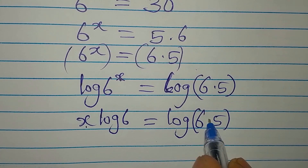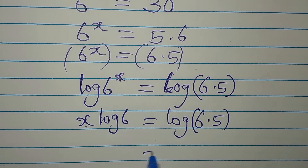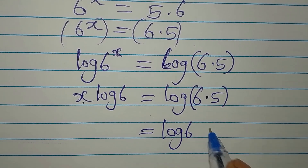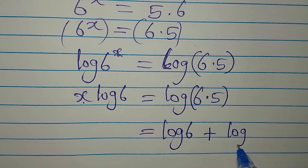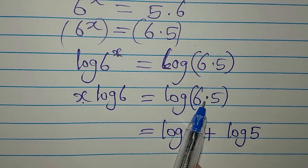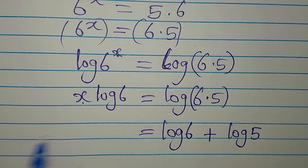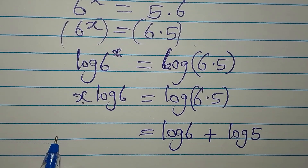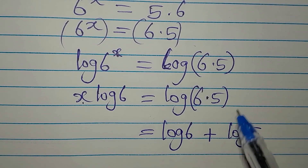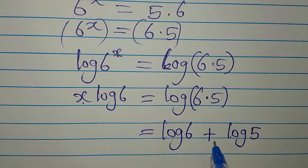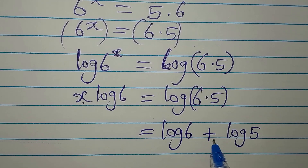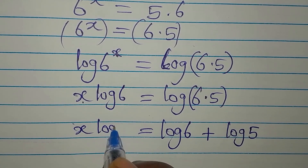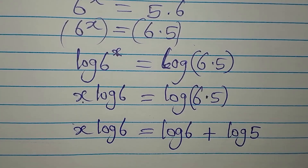Since this is multiplication, we split it using the log product rule: log(6×5) becomes log 6 plus log 5. If it were division, the sign here would have been negative. So we still have x·log 6 on the left.